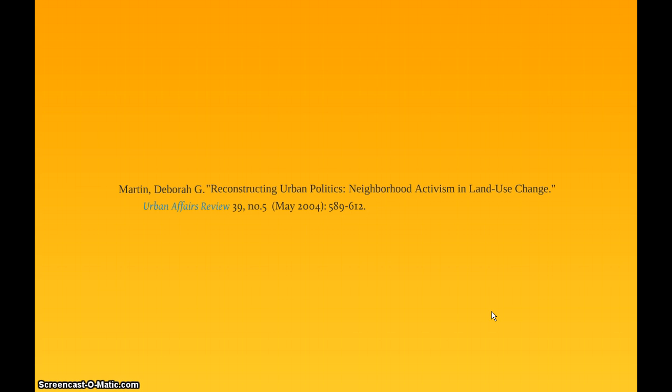Here we have an example of a journal article citation. The parts of this citation include the author name, the name of the article, the journal title, the volume and issue number of the journal, the publication date, and the pages in which the article appears. Let's take a closer look at these parts.